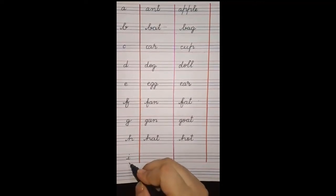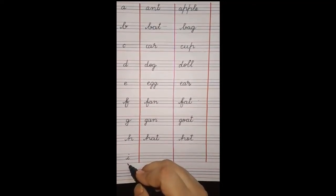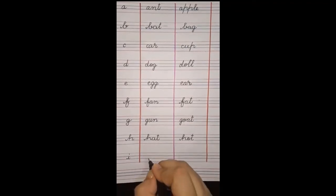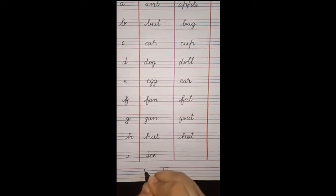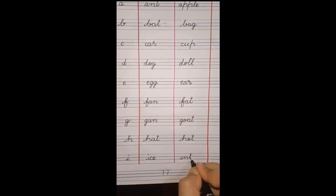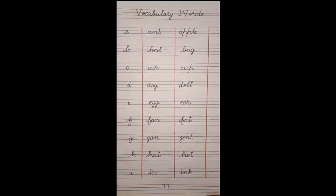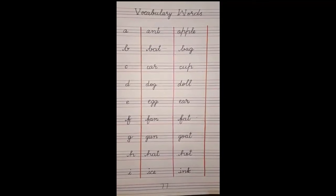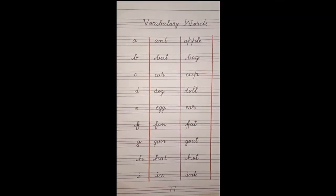Aur last letter hai hamara I. I ke friends make karne hain. I - ice cream, I - ink, I - igloo. Hum write karenge yahan pe I - ice. Ice means baraf. Aur next hai I - ink. I inka ink, jo red color ki ink hoti hai, teacher apne pen mein fill karti hai, ise kehte hain ink. Is tarah aap ki vocabulary words complete ho gaya.